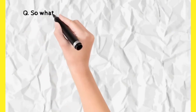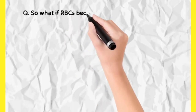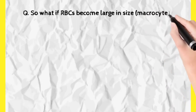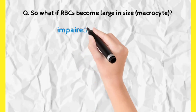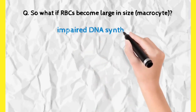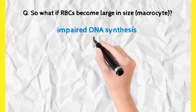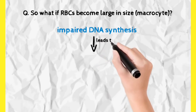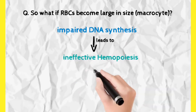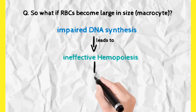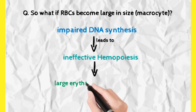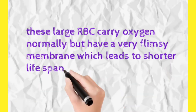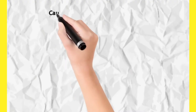These larger RBCs carry oxygen normally, but they have a flimsy membrane, and due to this flimsy membrane they have a shorter lifespan. The cause behind this is deficiency of vitamin B12 and folic acid, as seen in previous videos, which causes impaired synthesis of thymine monophosphate, leading to impaired hematopoiesis. This ineffective hematopoiesis results in the larger-sized RBCs present in megaloblastic anemia.